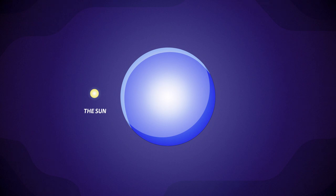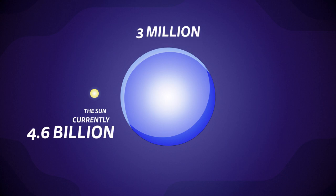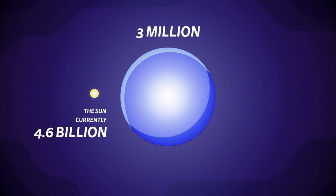The star would be a lot more violent in nature and its lifespan would be very short, only 3 million years, compared to our own sun which is halfway through its life in the billions of years.